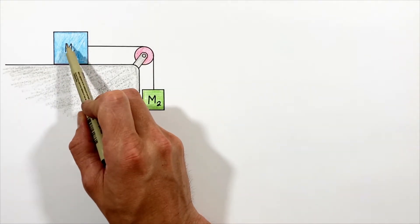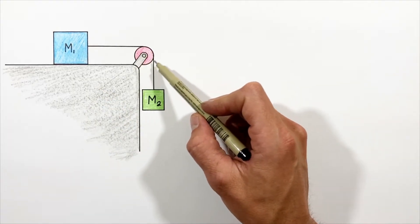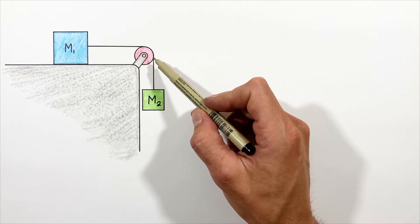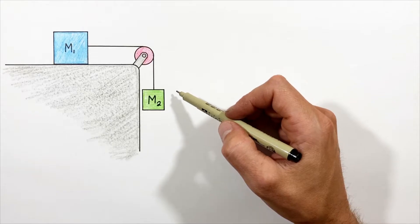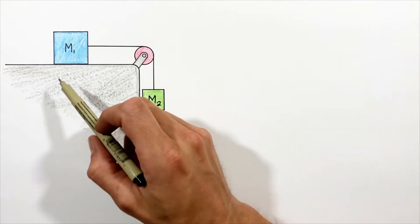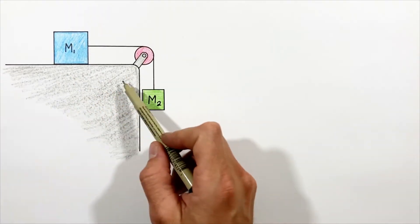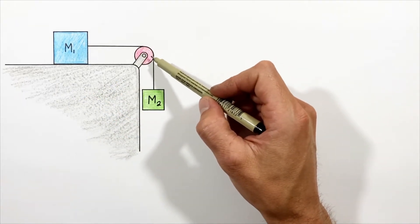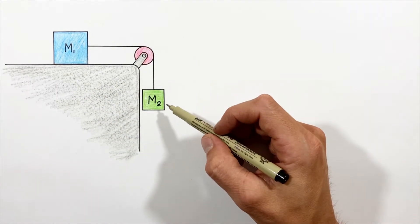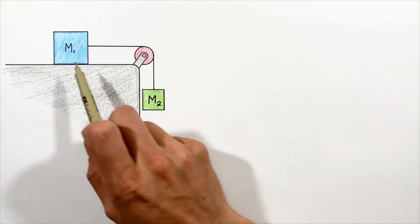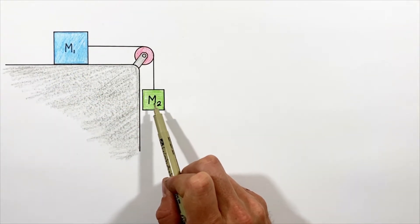There are a lot of variations on this problem — some involve friction between the block and the table, others have friction on the pulley or mass on the pulley. We're going to keep this as simple as possible: no friction between the block and the table, a nice level surface, and no friction or mass on the pulley. To get started, I want to draw a free body diagram for each of these blocks individually.